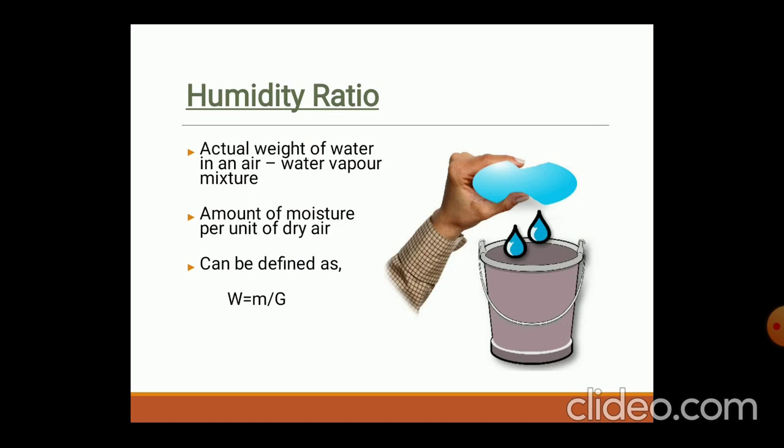The next property is humidity ratio. It is the actual weight of water in the air — water particles present in the air have a certain mass and weight. Humidity ratio is the actual weight of water vapor in an air-water vapor mixture. It is also defined as the amount of moisture per unit of dry air, expressed in mass per gram.